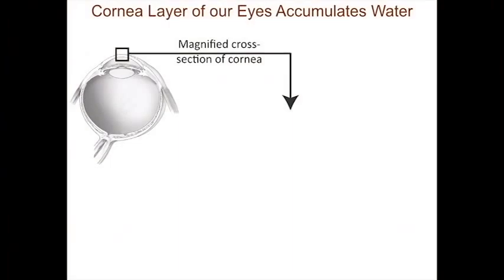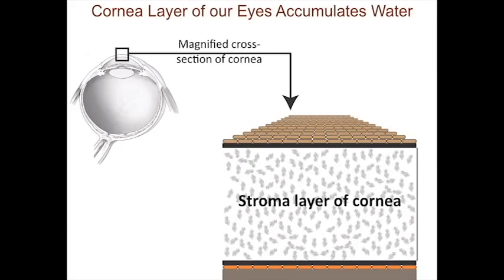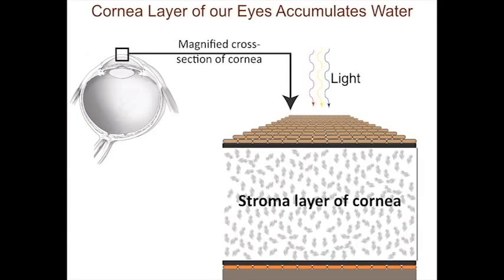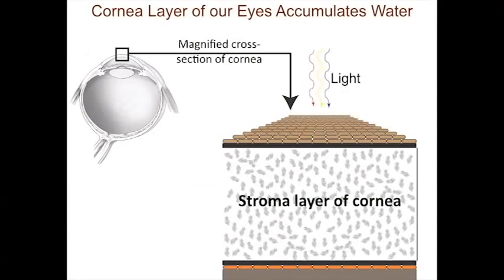At the top you'll see the outermost layer called the epithelium. In the center is the stromal layer, and at the back is the endothelial cell layer. Water tends to accumulate osmotically in the stroma of the cornea because of high concentrations of dissolved solute. Countering this, the endothelial cells pump water out of the stroma to maintain the fluid balance.